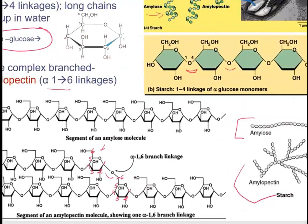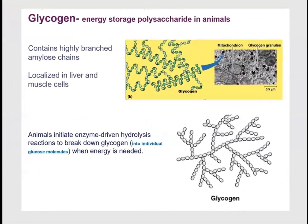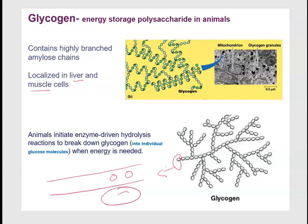Glycogen is the storage polysaccharide in animals, localized in liver and muscle cells. When blood sugar levels drop, glycogen is broken down and individual glucose molecules are released into the bloodstream, delivered to cells, and converted by mitochondria into ATP for energy. The same process occurs during a fight-or-flight response: stress hormones trigger glycogen breakdown, providing immediate energy to fuel muscle cells.